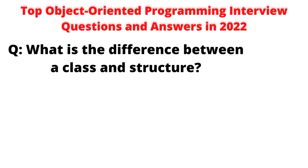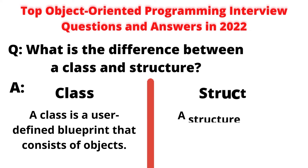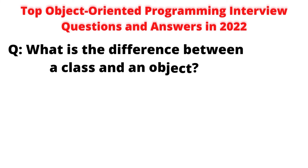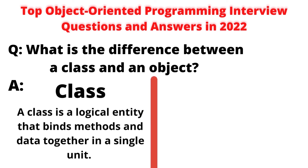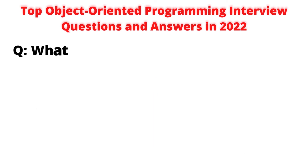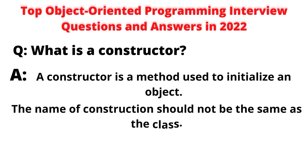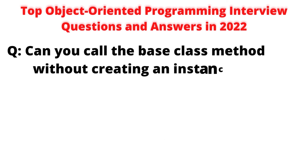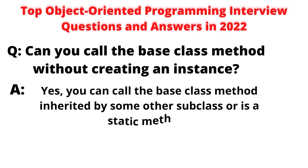Question: What is the difference between a class and structure? Answer: A class is a user-defined blueprint that consists of objects. A structure is a user-defined collection of variables of different data types. Question: What is the difference between a class and an object? Answer: A class is a logical entity that binds methods and data together in a single unit. An object is like the variable of the class which serves as an instance of the class. Question: What is a constructor? Answer: A constructor is a method used to initialize an object. The name of the constructor should not be the same as the class, and it does not have a return type. Question: Can you call the base class method without creating an instance? Answer: Yes, you can call the base class method if it is inherited by some other subclass or is a static method.